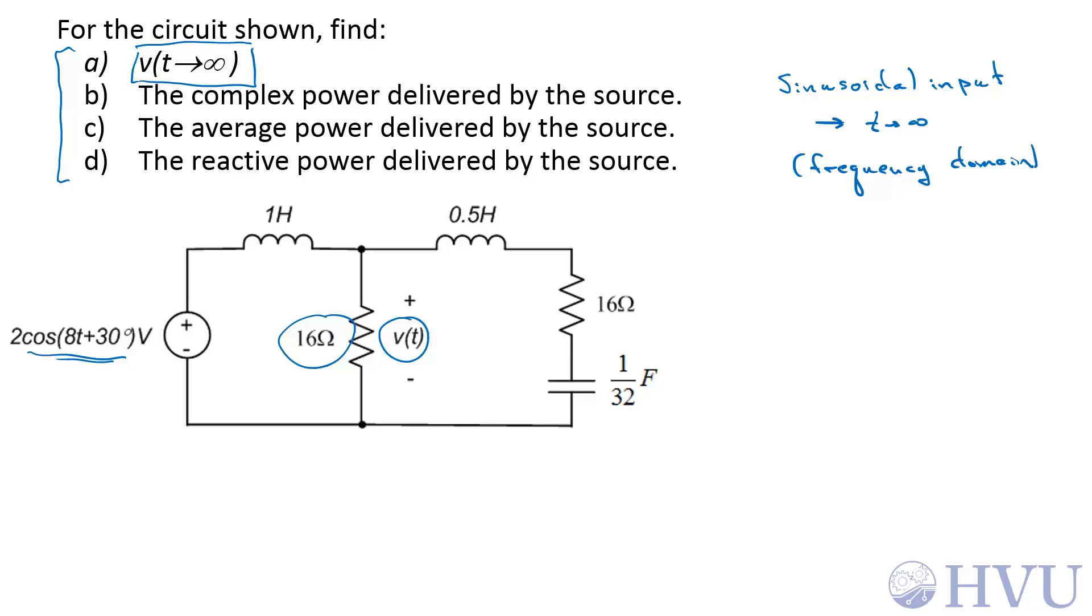The next three parts, B, C, and D, are about complex power, average power, and reactive power. So we want S, P, and Q.